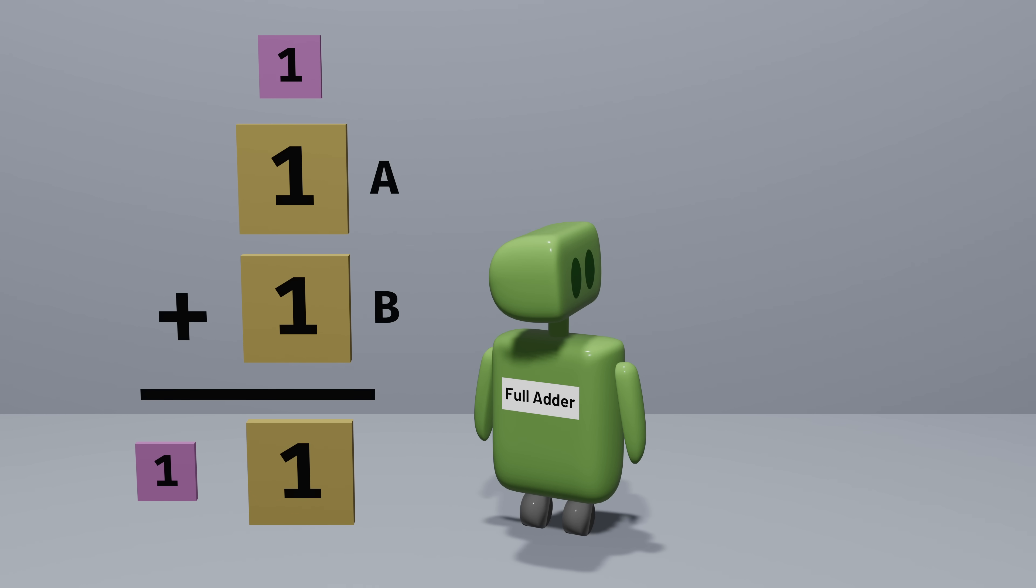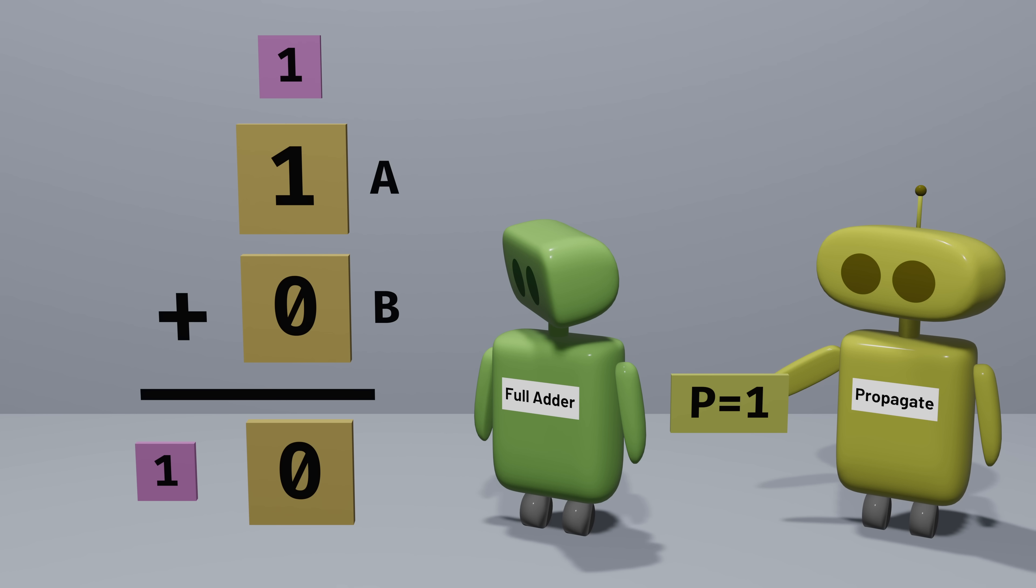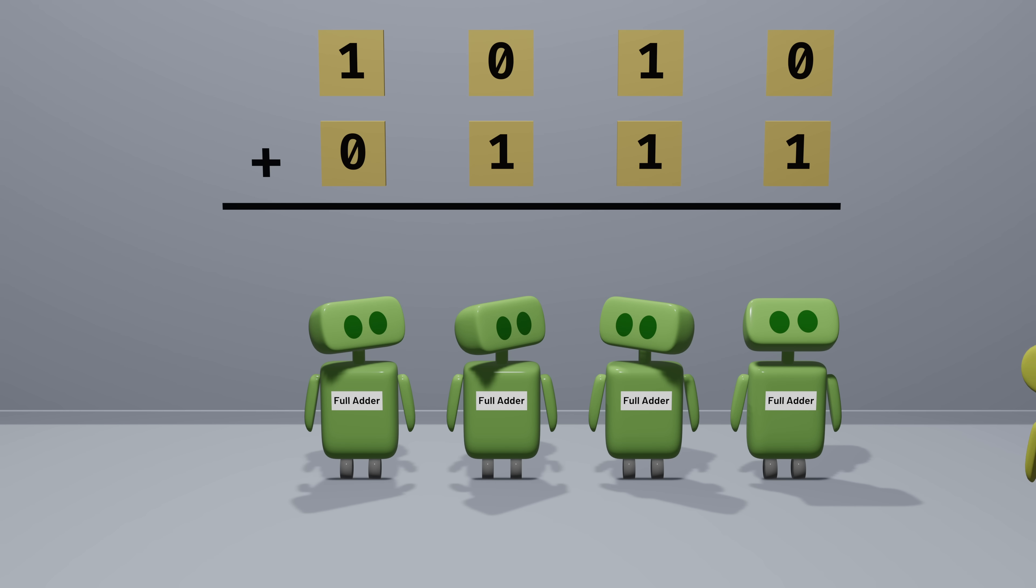For other input values, we might say that the addition propagates a carry. Propagating a carry means that if there's a carry input, then there will be a carry output. For example, if the input bits are a one and a zero, then this addition propagates a carry. If there's a carry input, then the output will have a carry too. But if the input bits are two zeros, then the addition does not propagate a carry. Even if there's a carry input, there will be no carry output. In other words, if we're adding together two bits a and b, then the addition propagates a carry if a or b are one. Thinking about these single bit additions in terms of generating and propagating carries is useful for two reasons.